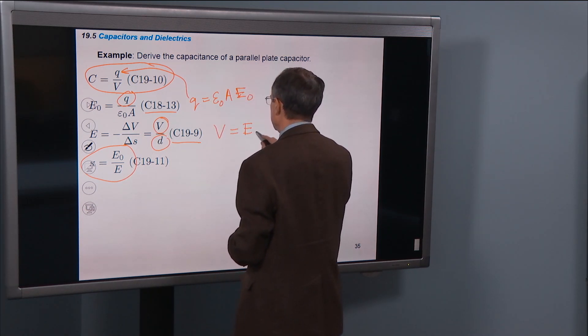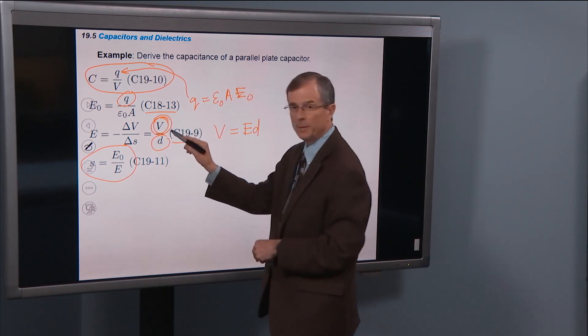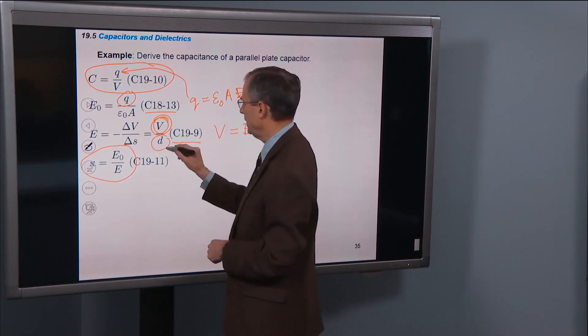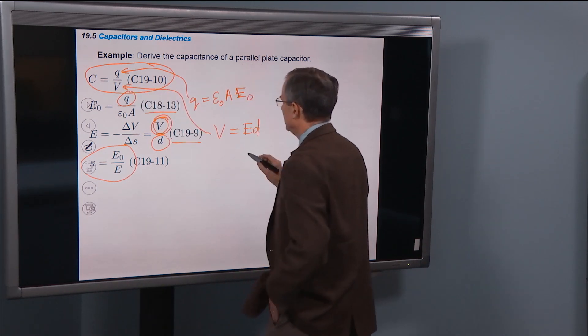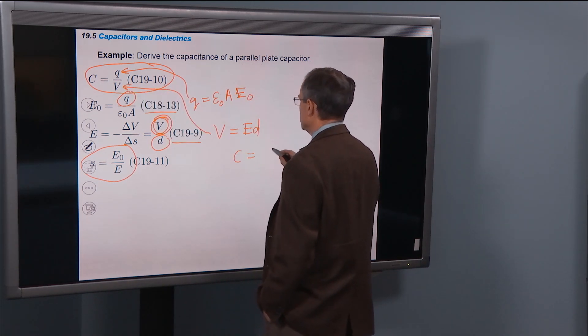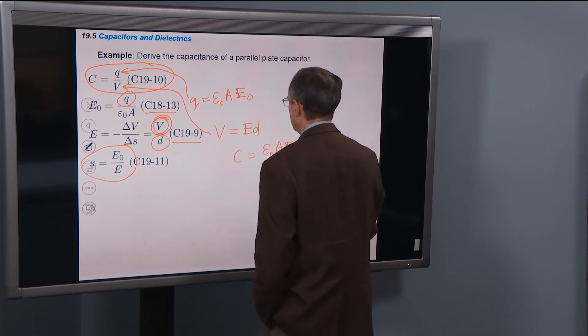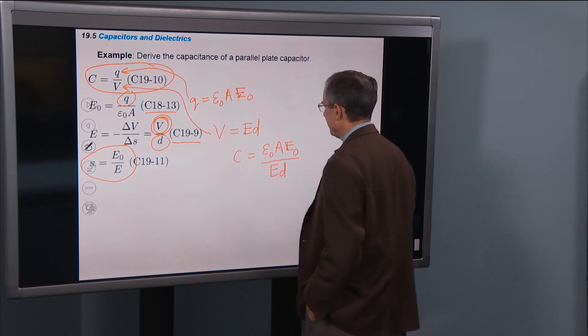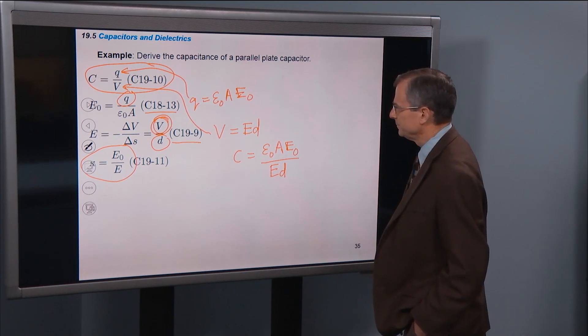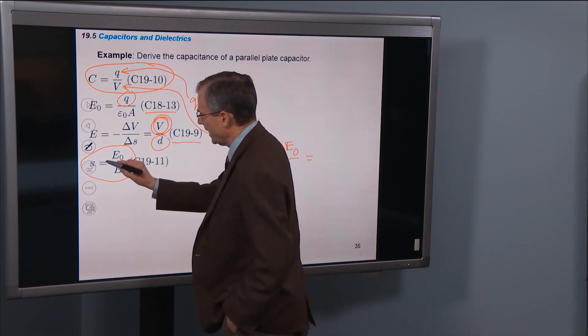I'm also going to solve this one for V. V is E times D. So I've solved this equation for V by multiplying both sides by D. I'm going to put that in here and see what we get. C now becomes ε0AE0 divided by E times D.